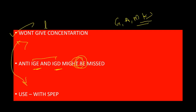Similarly, immunofixation can be used in urine as well. In the urine baseline, we can find out how much is being filtered and the type of immunoglobulin, which may help in prognosis, treatment, and follow-up.